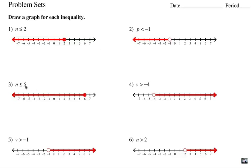Number 3, less than or equal to 6, include the 6, and go to the left. Number 4, greater than negative 4, not including negative 4, but getting bigger to the right. Number 5, V is greater than negative 1, don't include the negative 1, notice how there's no equal bar there. White dot there, and going to the right. And number 6, N greater than 2, that's not including the 2, going to the right.